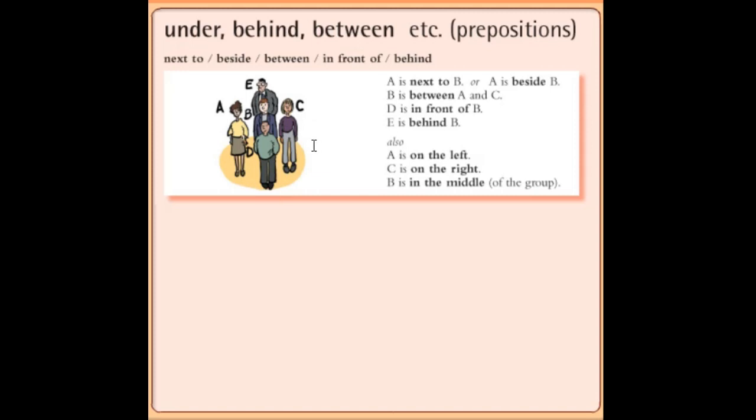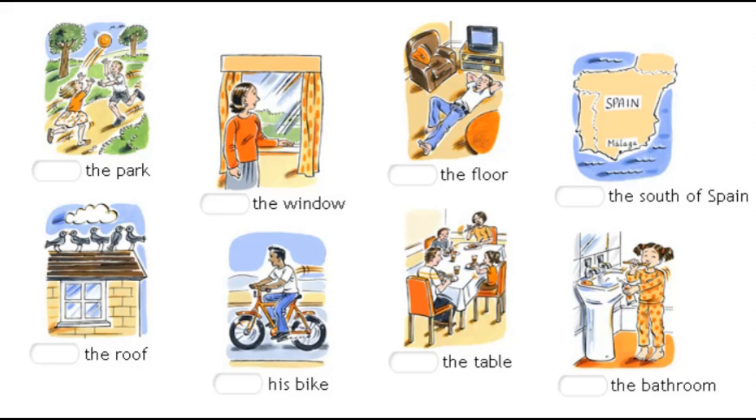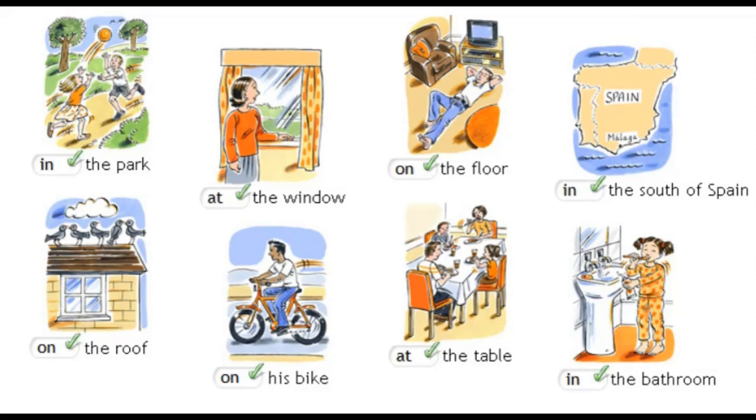Now we will try to understand the uses of different prepositions in sentences with the help of these pictures. See the pictures and fill in the gaps: 'in', 'at', or 'on'. On the chair, on his bike, at the table, in the bathroom.